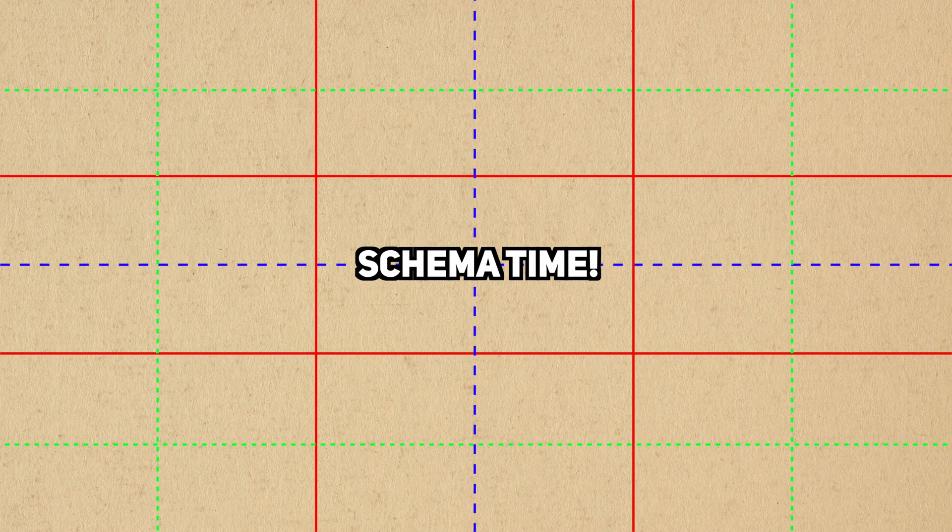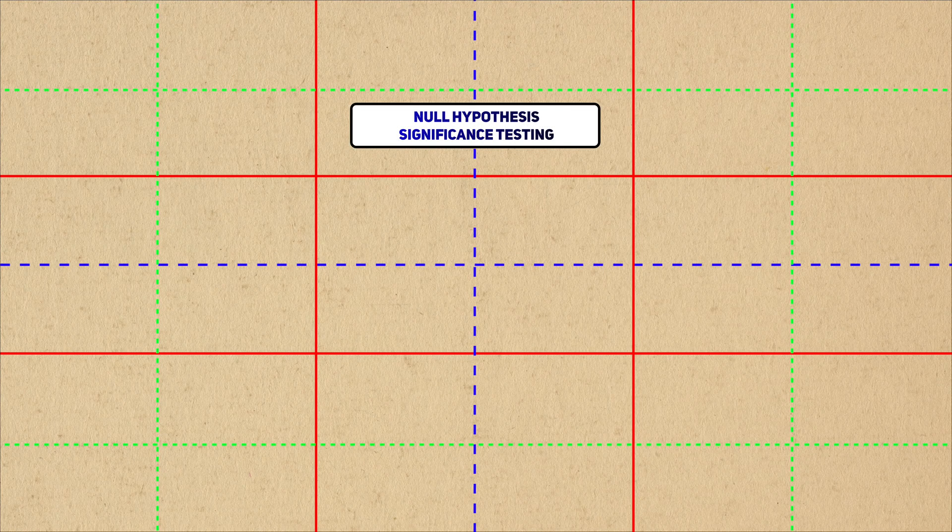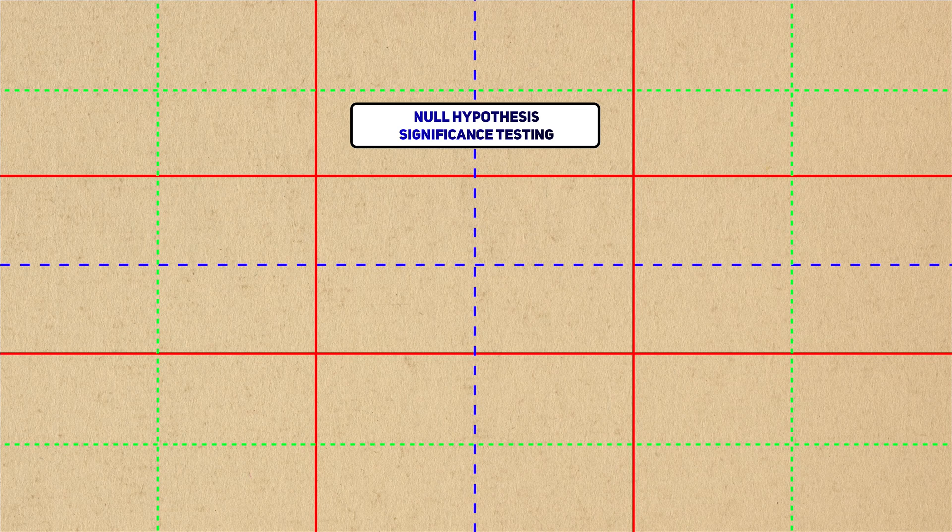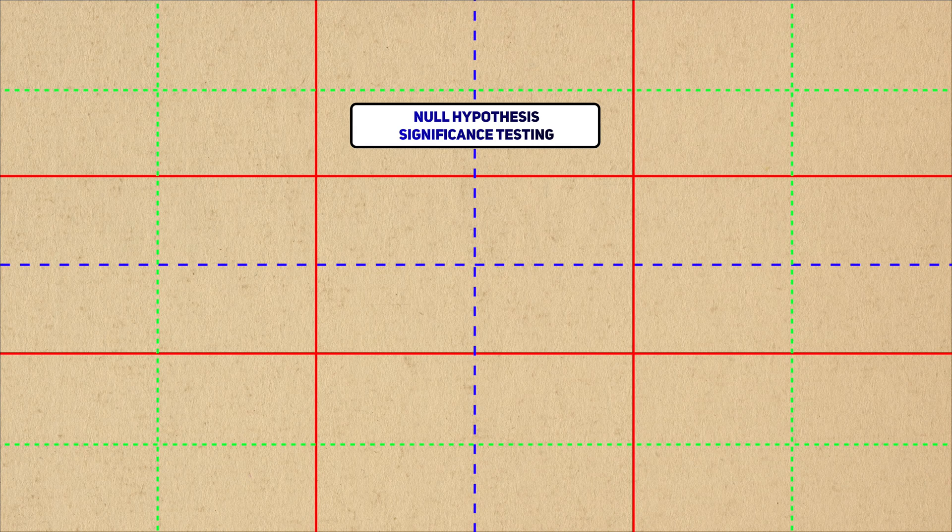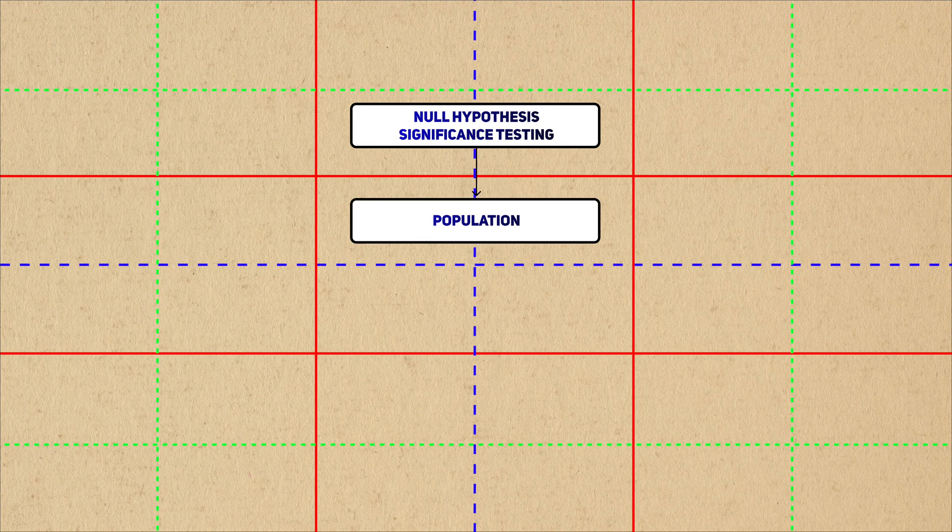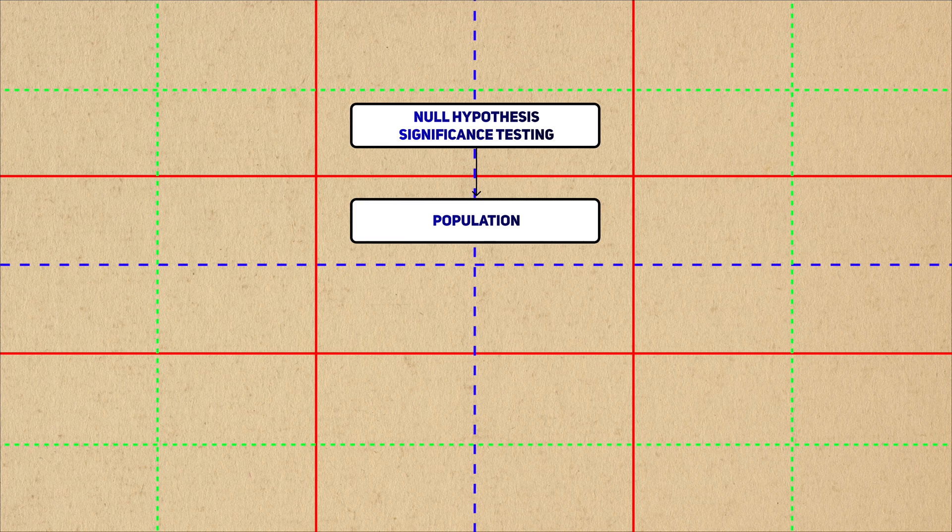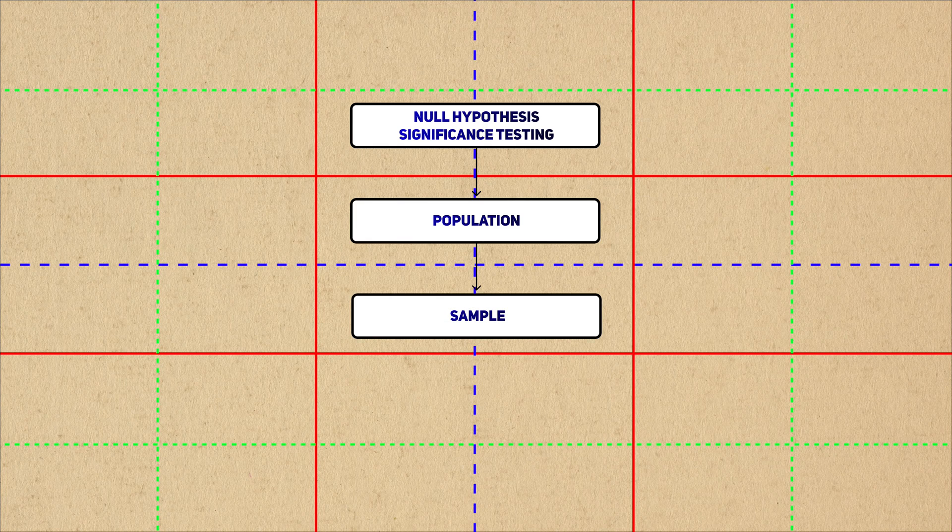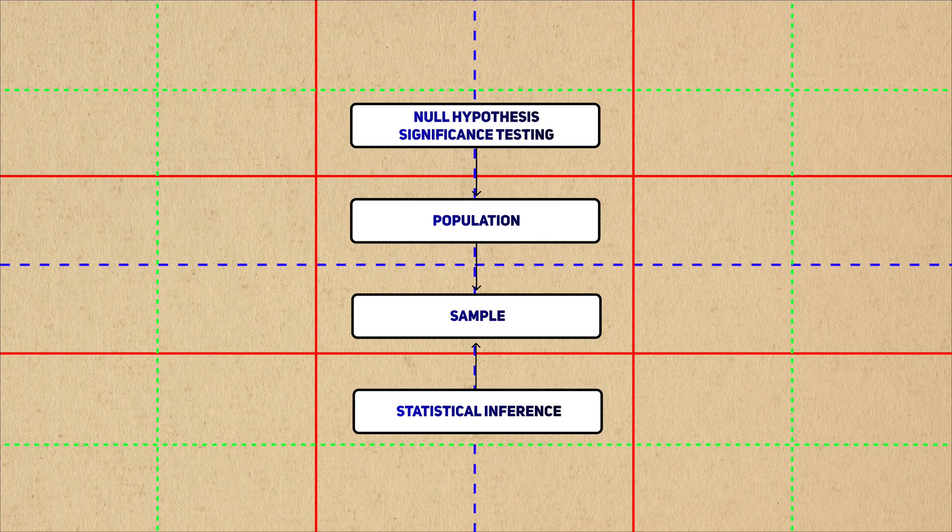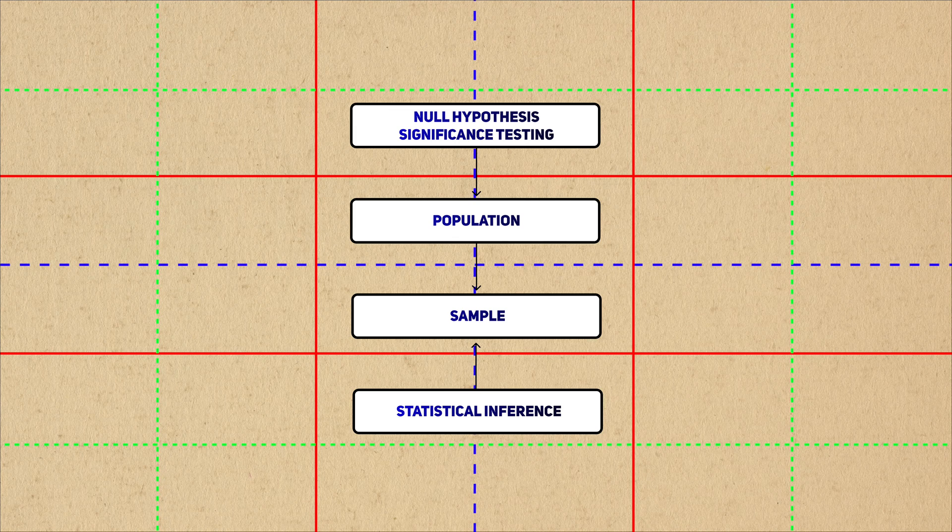Let's wrap up this video with a schema. This video introduces the null hypothesis significance testing method, or NHST, and uses the one-sample t-test as an example. A one-sample problem refers to a research question that's concerned with one population, a group of interest. We typically can't observe the entire population, so we perform statistical inference based on a smaller sample we can actually collect data from.